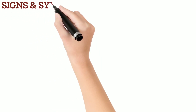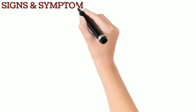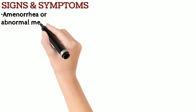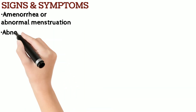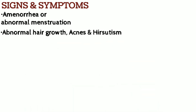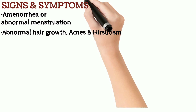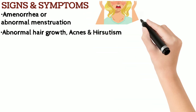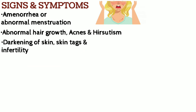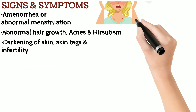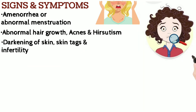Signs and symptoms of PCOS involve abnormal menstruation or absent menstruation, hair growth on abnormal parts of the body, acne and male-like characteristics, darkening of skin, and infertility, which are also some important presentations of PCOS.